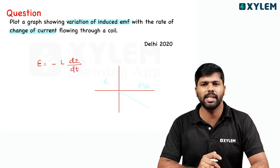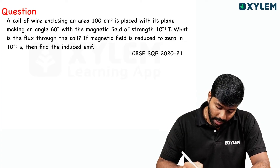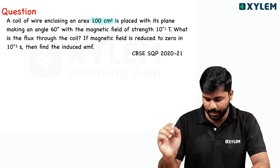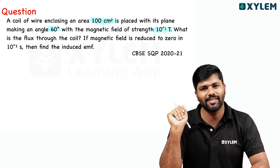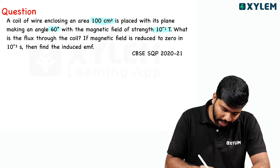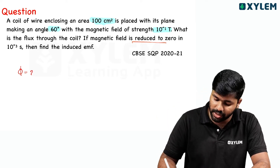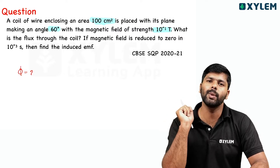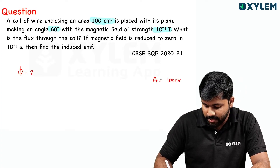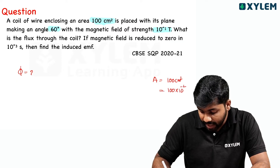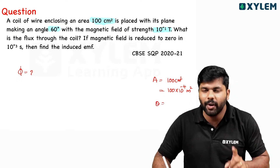Moving to the third question, 2020-21 sample question: A coil of wire enclosing an area of 100 centimetres squared is placed with its plane making an angle of 60 degrees with the magnetic field of strength 10 raised to minus 1 tesla. What is the flux through the coil? The area is 100 cm² = 100 into 10 raised to minus 4 metres squared. The plane makes 60° with the field.